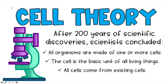And then all cells come from existing cells. We talk about in life science how cells are created through mitosis and meiosis in reproduction, but all cells have to come from a cell that already exists. Those are the three things scientists were able to summarize after 200 years of scientific discoveries, all fueled by improvements in microscope technology.